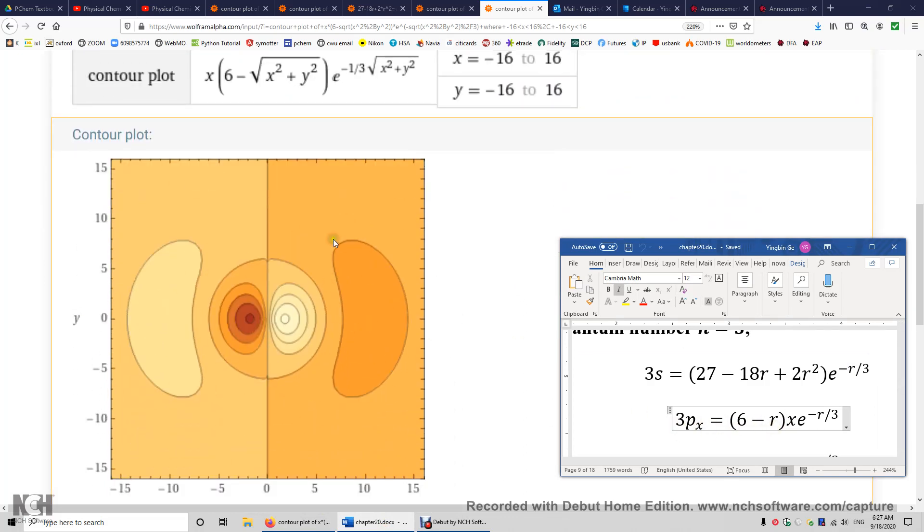Well, wonderful. We have this 3px atomic orbital. And I want to tell you the sign of each lobe. This is positive, negative, positive, negative. There are two nodes. When r equals 6, we have a spherical node. When r equals 6. So this is 6. This is 6. So when r equals 6, we have a spherical node.